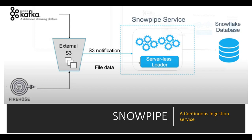Now you want to consume all that data into Snowflake. Manually, it is very inefficient to load the data every time once it is received on the S3 location. Snowpipe is a service which makes this entire process automatic — we create one pipeline through which all the data flows from S3 to Snowflake.